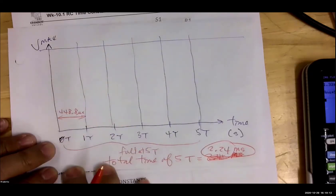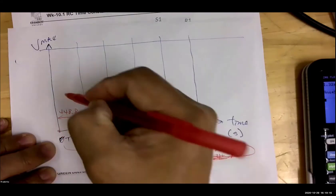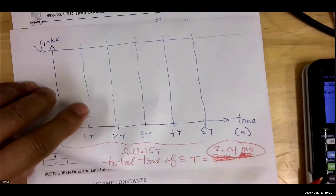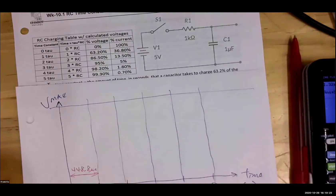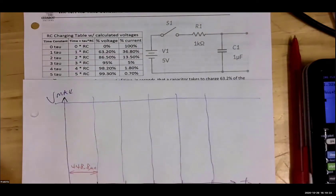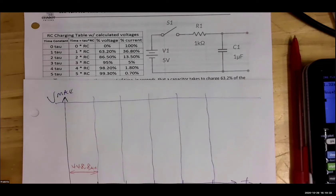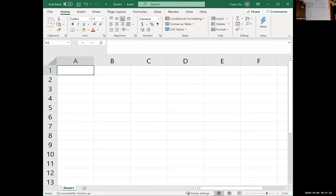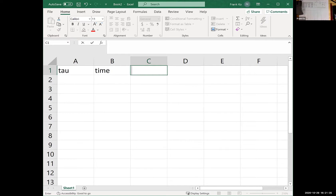Now the next thing we're tasked with is how much will the voltage be at various points going up the graph? The easiest thing to do is go to Excel and show you how to punch this up. I'll set up columns: tau, time in microseconds, percent voltage, and percent current. We'll have rows for zero, one, two, three, four, and five tau.